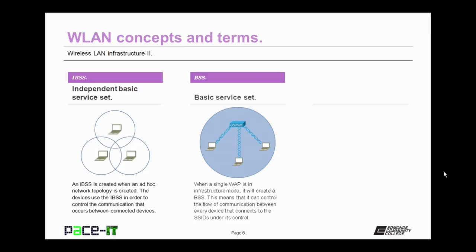Then there's the BSS, or Basic Service Set. When a single wireless access point is in infrastructure mode, it will create a BSS. This means that it can control the flow of communication between every device that connects to the SSIDs under its control.